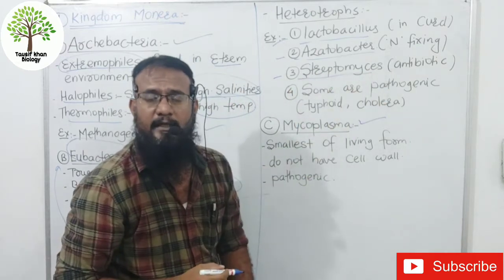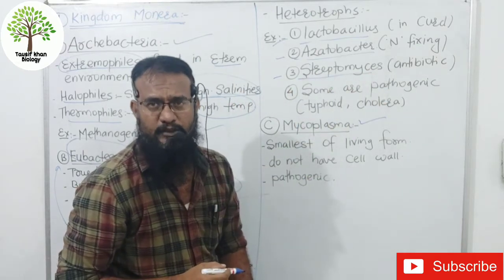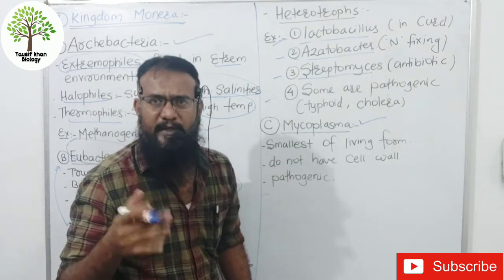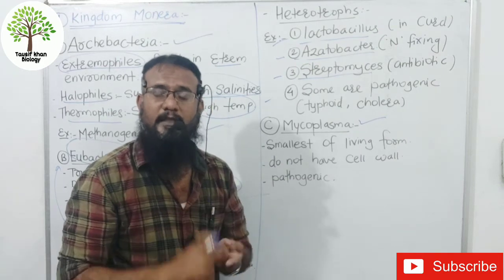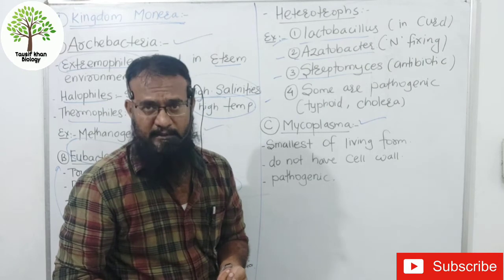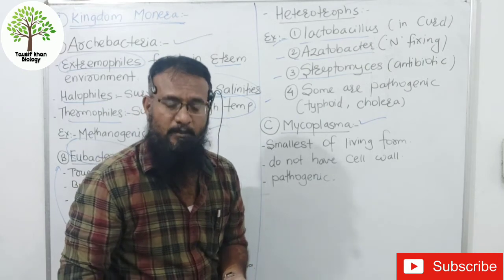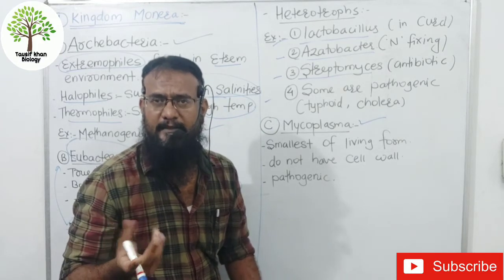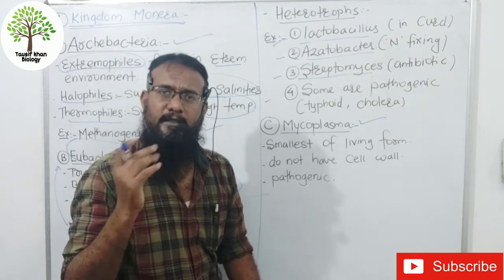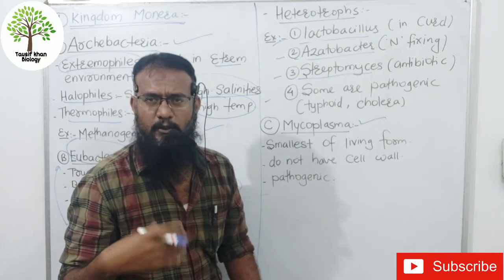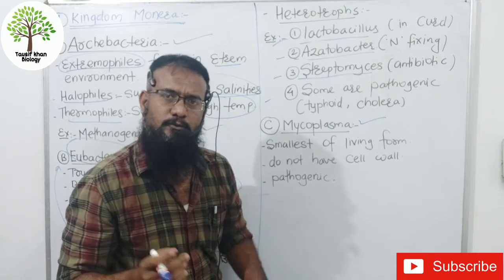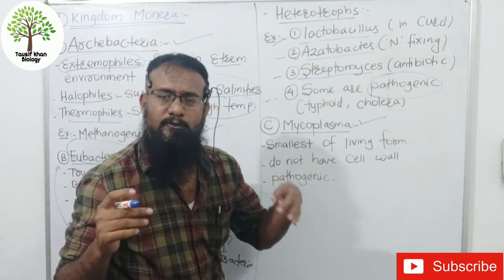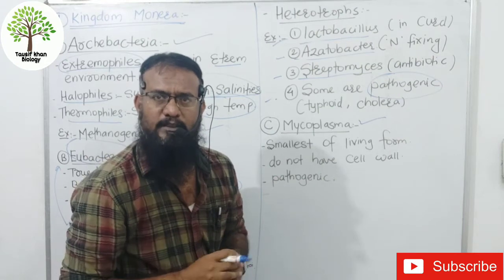In heterotrophic bacteria there is also antibiotic production. They are used for various functions. There are also pathogenic bacteria in Eubacteria, such as those causing typhoid, cholera, etc. These pathogenic bacteria cause disease.